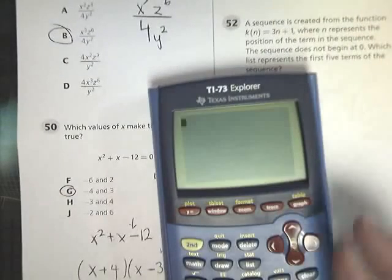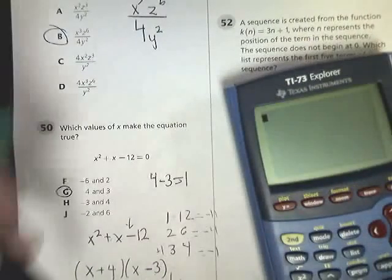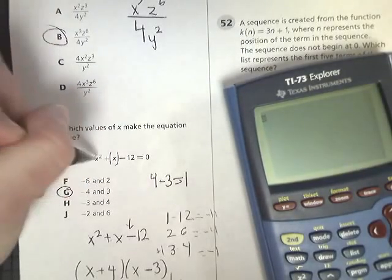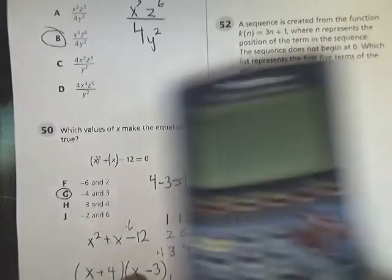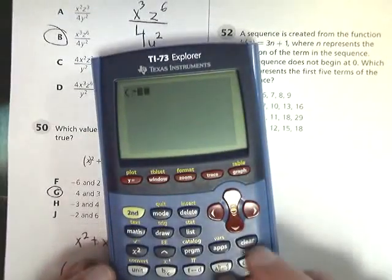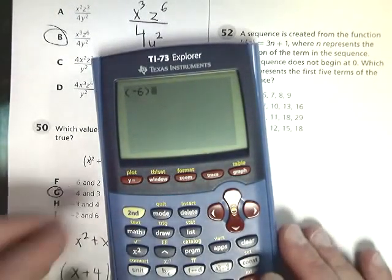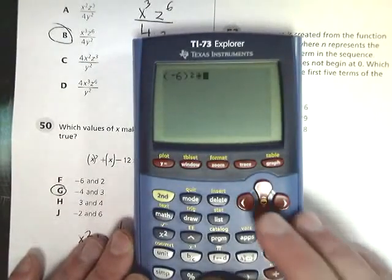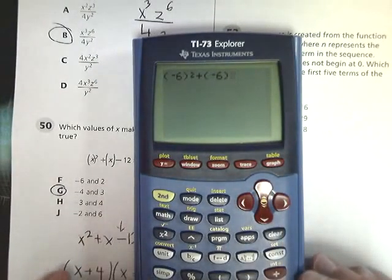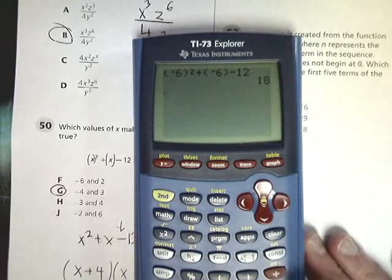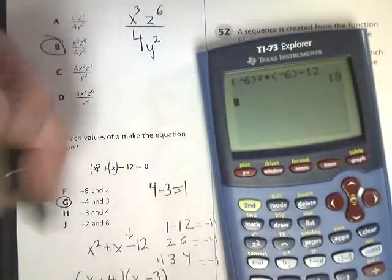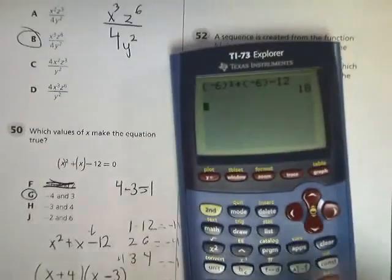So let's try negative 6. The only thing you're going to have to think about if you use this, which is a version of substitution, is just to make sure that you put a parentheses around where the x's are. So I'm going to do parentheses negative 6. Close the parentheses before you square it. See how it makes 18? That means it's not 0, which is what it needs to be to make it true. So that's out. So let's try our actual answer choices.